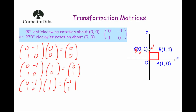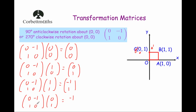And finally, point C, which is the point 0, 1. When we rotate it 90 degrees anti-clockwise about the origin, it should move to the point minus 1, 0. So we've got 0, minus 1, 1, 0 multiplied by the point 0, 1. Taking the first row: 0 times 0 is 0, minus 1 times 1 is minus 1. Then the second row: 1 times 0 is 0, 0 times 1 is 0, adding them together is 0. So it moves to the point minus 1, 0 — that's point C dash.